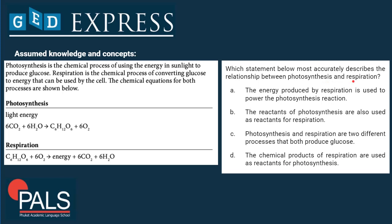Which statement most accurately describes the relationship between photosynthesis and respiration? Option A: the energy produced by respiration is used to power the photosynthesis reaction. We do get energy from respiration, yes, but is it used to power photosynthesis? No — the energy that powers photosynthesis is light energy from the sun, not energy from respiration. So it's not A. Option B: the reactants of photosynthesis are also used as reactants for respiration. Reactants are on the left side of the reaction. Reactants of photosynthesis are carbon dioxide and water; reactants of respiration are glucose and oxygen. So B is wrong.